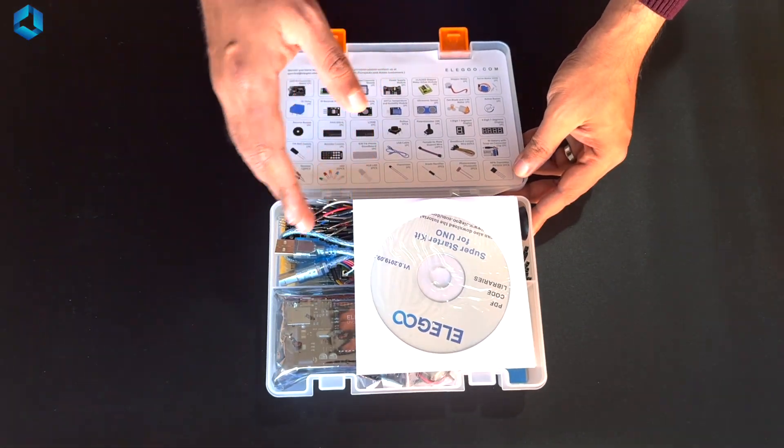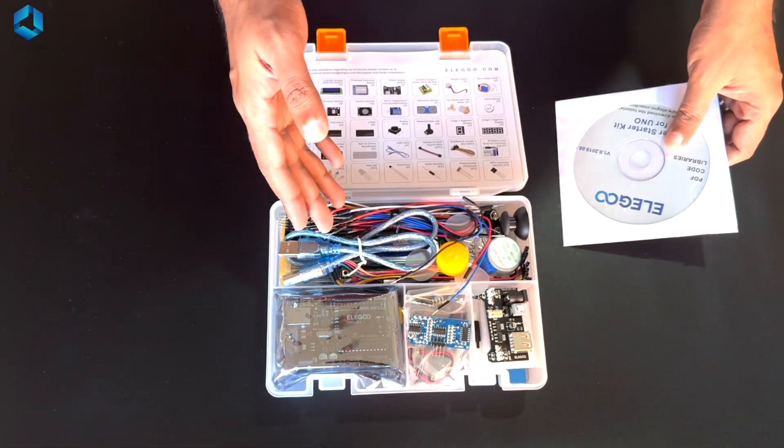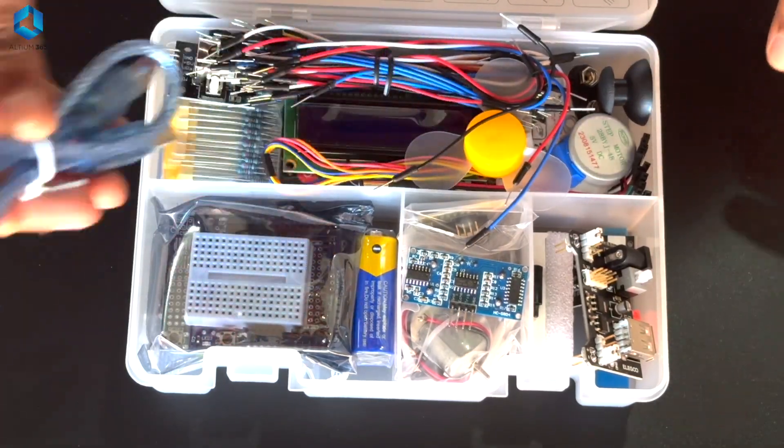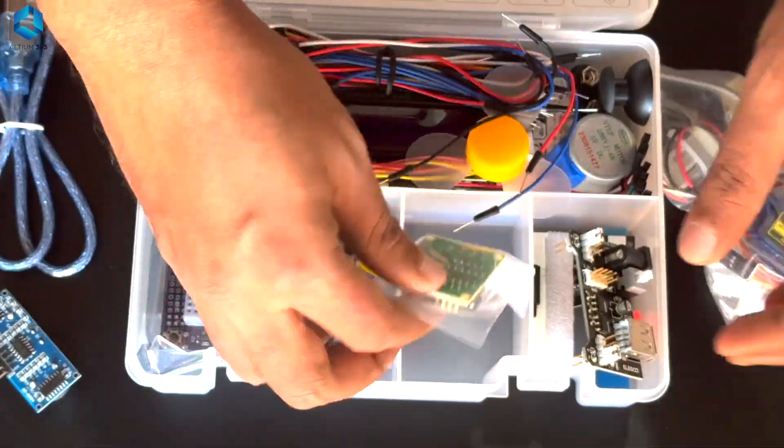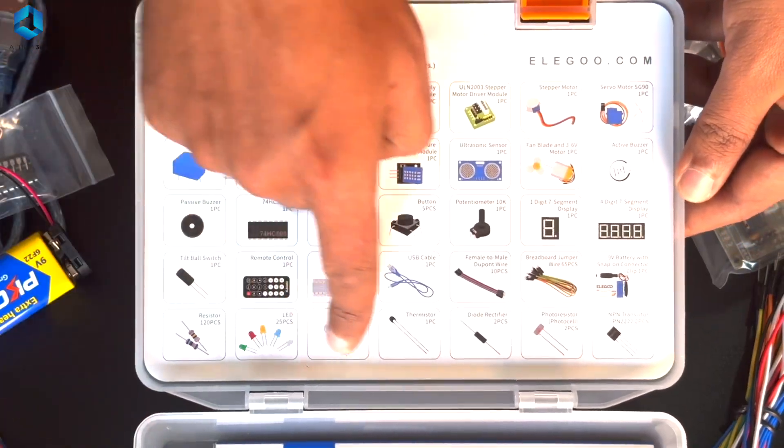This kit contains most of the simple components like LEDs, resistors, capacitors, so many different kinds of sensors, motors, and there were so many wires that helped me to connect sensors directly to the Arduino so I didn't have to find individual components and sensors that will work with Arduino. Everything was already there in the kit.